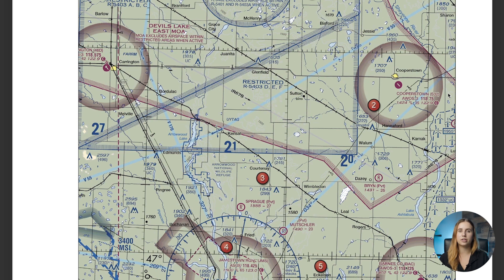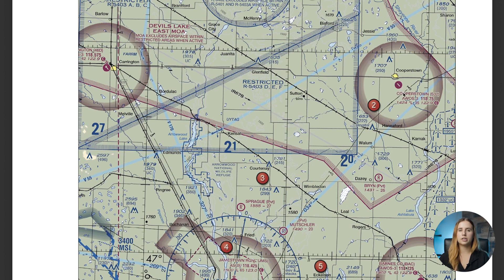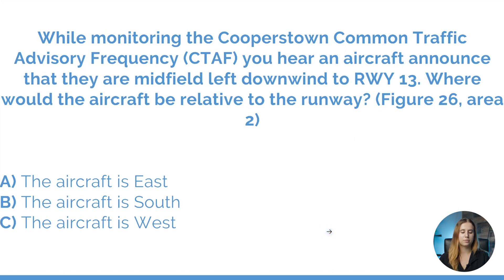We know that when this aircraft lands, they're going to be landing on runway 130, heading in a southeast direction. If they are in the left downwind, they will be flying parallel to the runway in the opposite direction they intend to land. Identifying Cooperstown, we have the airport and can see the runway. The aircraft will be landing on runway 13, a heading of 130. Currently flying left downwind, they're parallel to the runway and to the right side, flying in the opposite direction — which puts the aircraft east of the runway. The most correct answer is A: the aircraft is east.